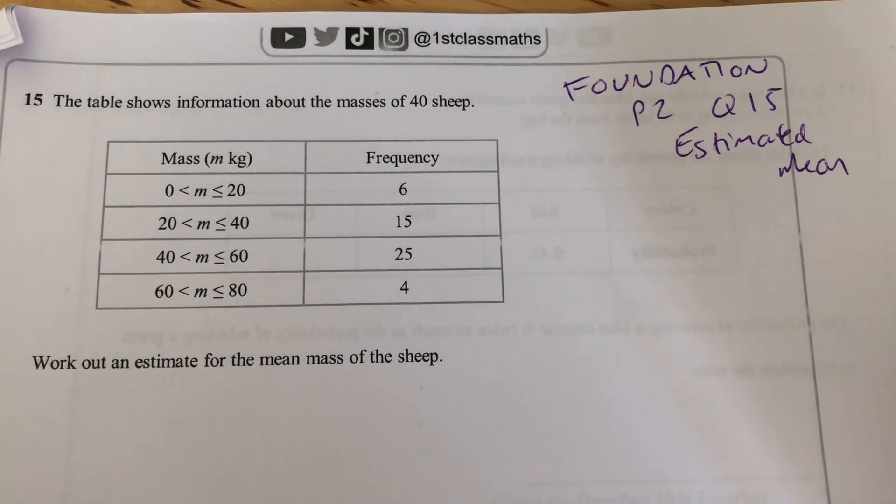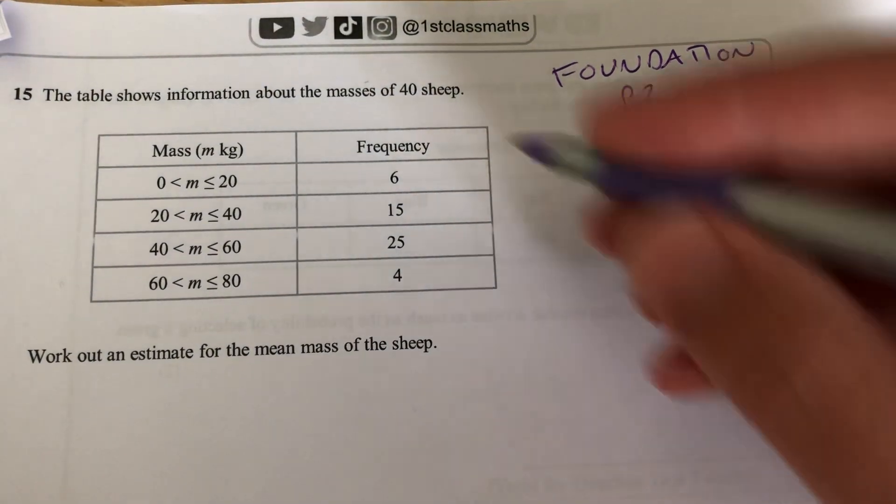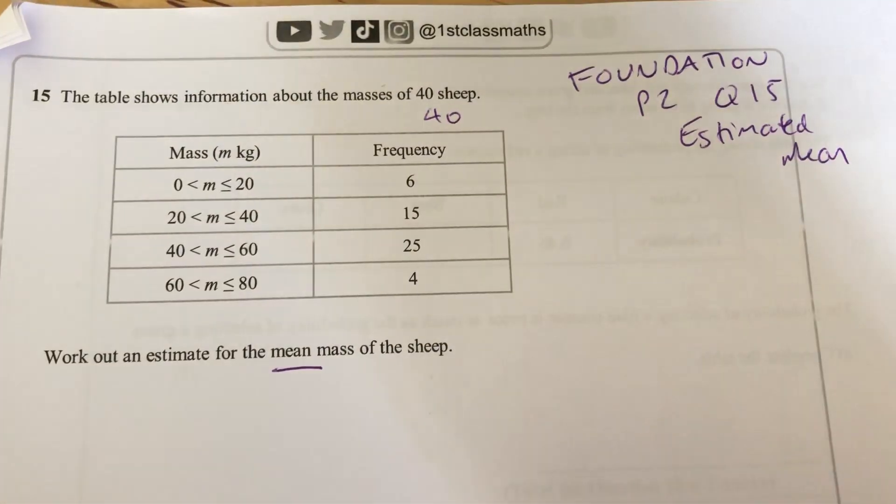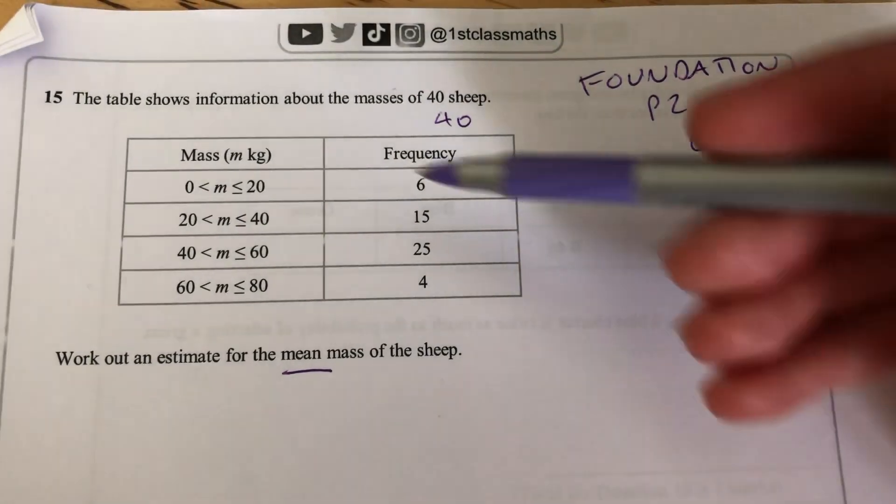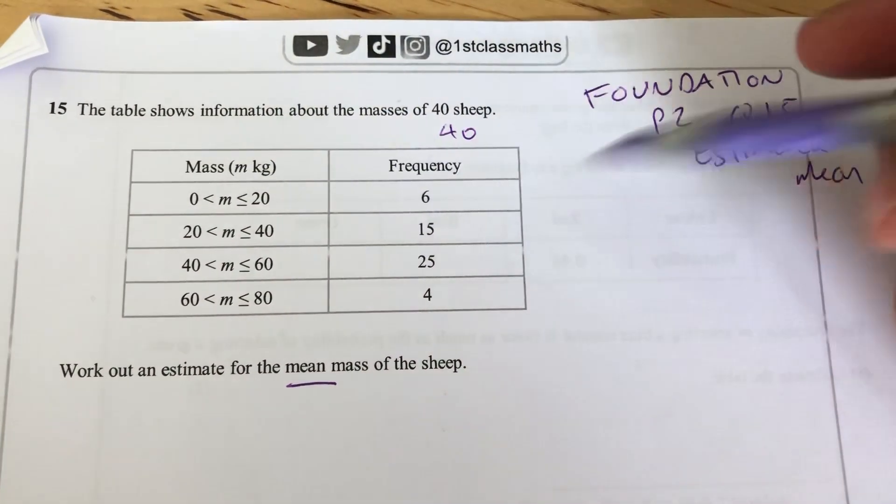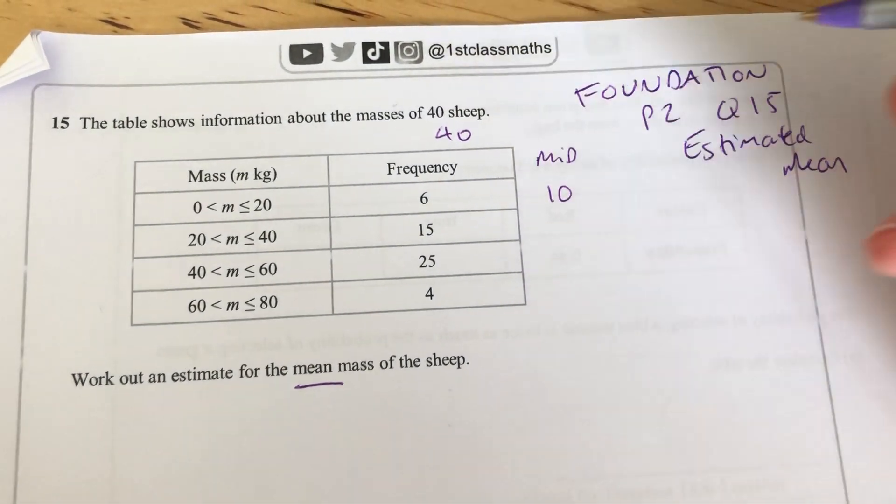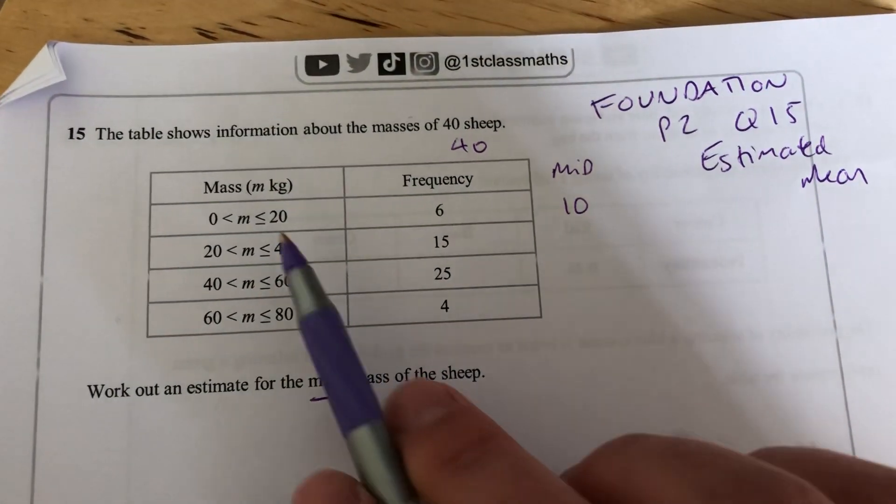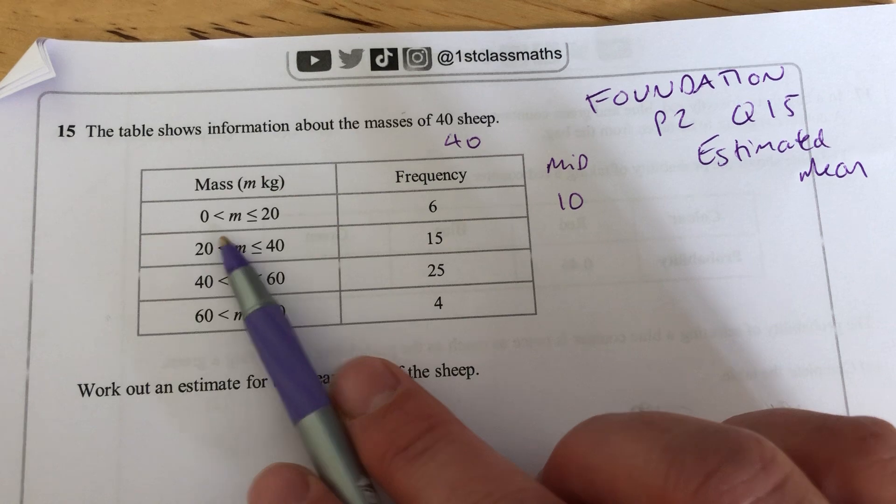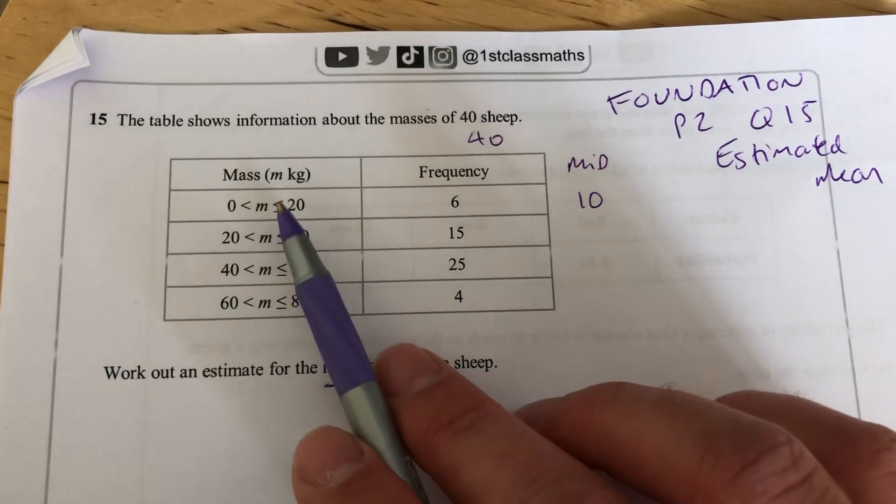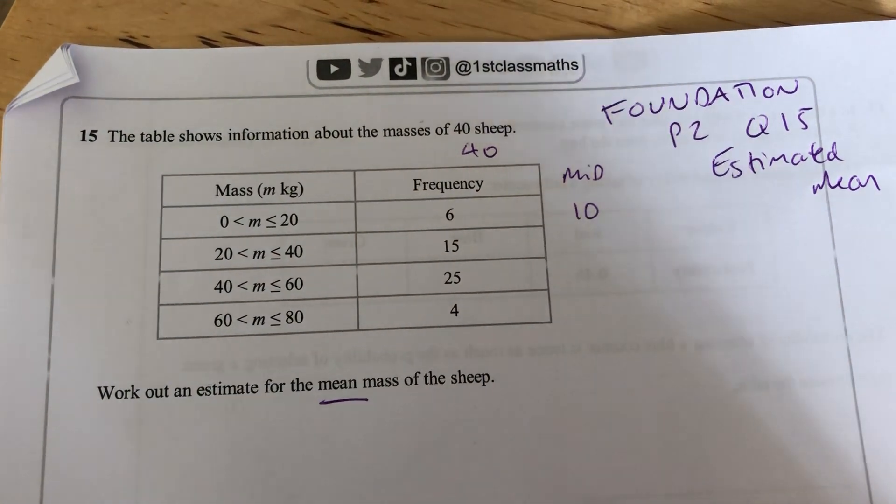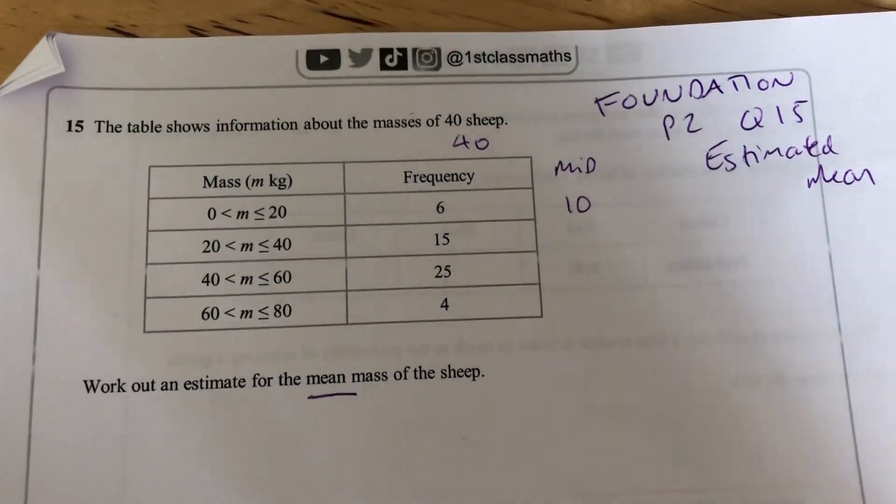The table shows information about the mass of 40 sheep, and we're going to work out the estimated mean. So it's in intervals here, 0 and 20. Got to find the midpoint first, so it's 10, because we don't know where those 6 lie in the 0 to 20, so we just assume and estimate that we can use the midpoint as an average.